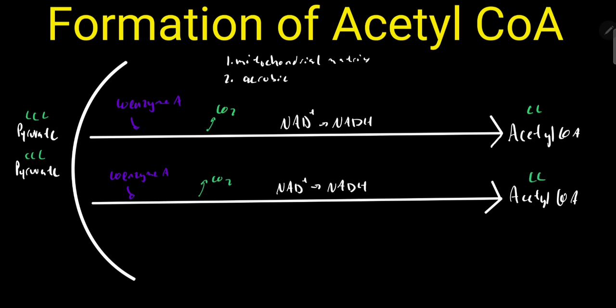It's important to remember that it takes a total of two ATPs to move the two pyruvates into the mitochondrial matrix. So this is a net loss of two ATP — NADH is formed, but no ATPs are produced. These two acetyl-CoA will go into the next step of cellular respiration, which is the Krebs cycle, which will be covered in the next video.